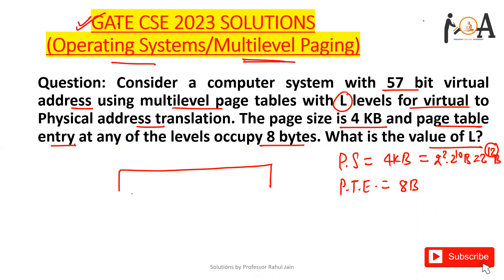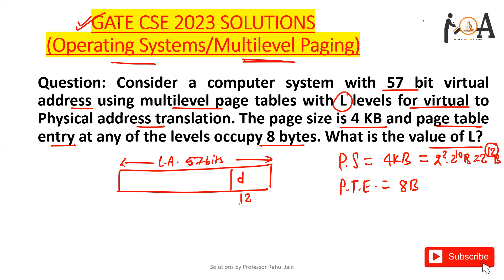The logical address contains 57 bits using multi-level paging. Out of those 57 bits, 12 bits are used for the page offset. So the remaining bits are 57 minus 12, which gives us 45 bits remaining for the page number portion.